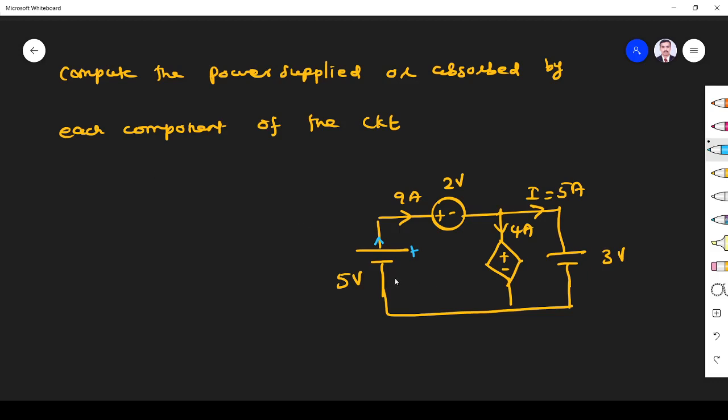Let us assume this is source 1, this is source 2, this is source 3, this is source 4. So power delivered by source 1 is P equals V into I. It is supplying because current is coming out of the positive terminal. You got this voltage value V is 5, I is 9.